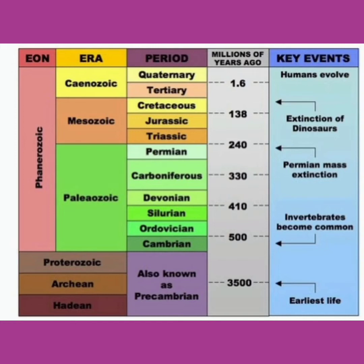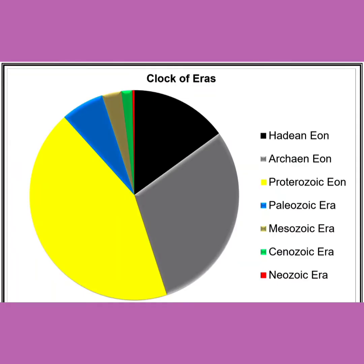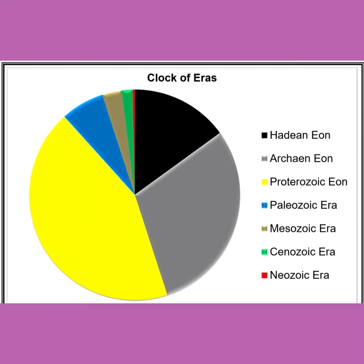The four major divisions of time in the geological time scale are Eons, Eras, Epochs, and Periods. The largest blocks of time on the geological time scale are called Eons. Eons are split into Eras, each Era is divided into Periods, and Periods may be further subdivided into Epochs.